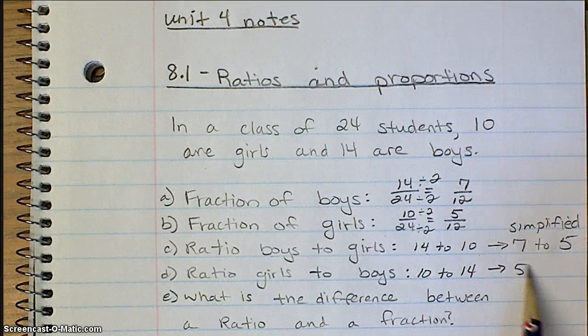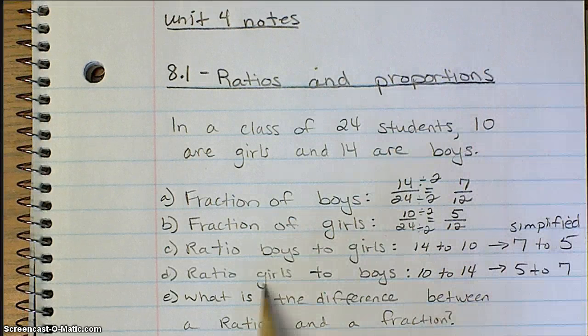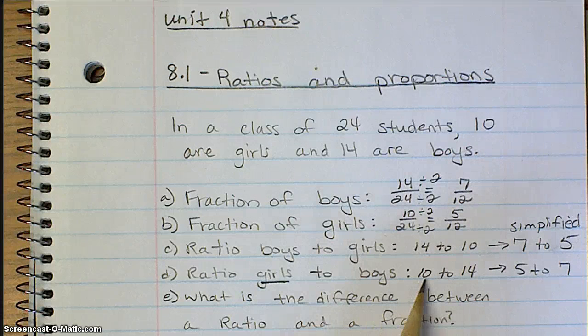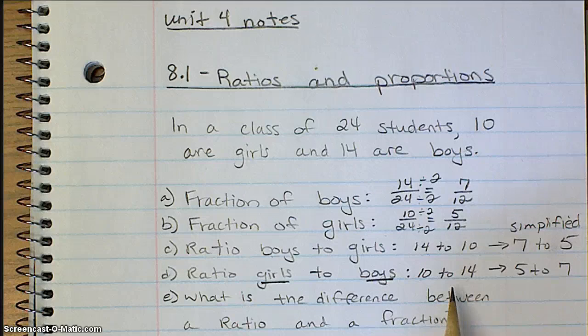And likewise here, it would be 5 to 7, because girls are first. 10 girls, 14 boys, so it's just kind of that ratio flip-flopped.